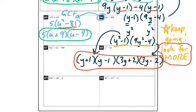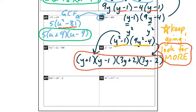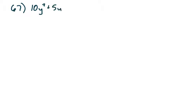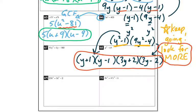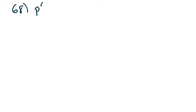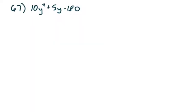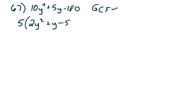How about two more — 67 and 68. Number 67 was 10y squared plus 5y minus 180. Let's do a GCF check. I almost saw the 10 there because I saw all those zeros, but I think a 5. Let's take out a 5. We're left with 2y squared plus y minus 36.